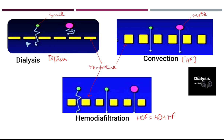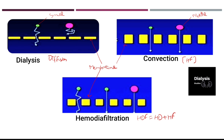Let's understand with a diagram. This is a semi-permeable membrane. These are small molecular weight toxins and these are middle molecular weight toxins or beta-2 microglobulin. In dialysis, diffusion happens and small molecular weight solutes are removed. In hemofiltration, convection takes place and both small and middle molecular weight solutes including beta-2 microglobulin are removed.